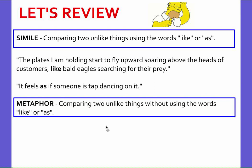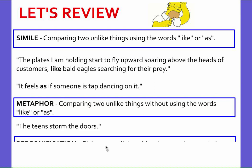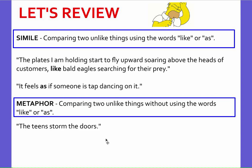Here's a metaphor. A metaphor is when you compare two unlike things without using the words 'like' or 'as.' For example: the teens storm the doors. The teens come so fast, as if they are bombarding the doors, but I'm using the word 'storm' — I'm comparing the way they're coming to the doors like a storm, but they're not actually a storm. So I'm comparing the two without using the words 'like' or 'as.'